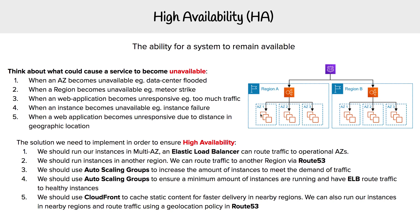Moving on to our next scenario: what happens when a region becomes unavailable? Let's say there is a meteor strike — a very unlikely scenario, but one which would take out an entire region, all the data centers in that geographical location. You're going to need instances running in another region. To facilitate routing of traffic from one region to another, that's going to be Route 53.